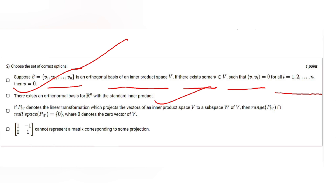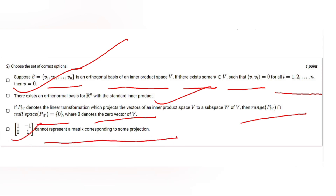Option C: if P_W denotes the linear transformation which projects vectors of an inner product space V to a subspace W of V, then the range of P_W intersected with the null space of P_W equals {0}, where 0 denotes the zero vector of V. Option D: a given matrix cannot represent a matrix corresponding to a projection.